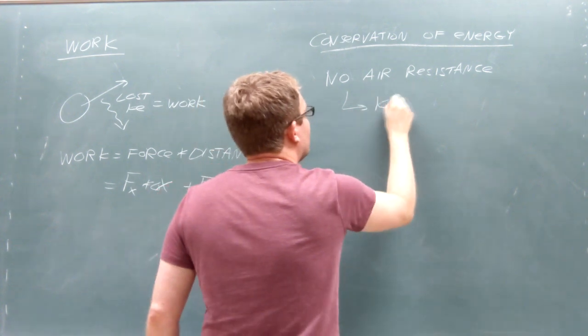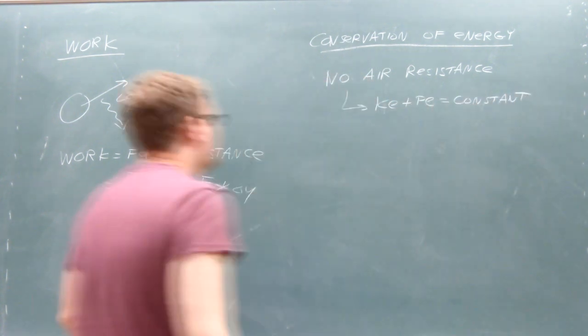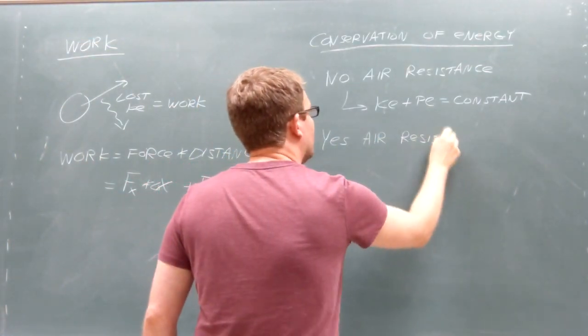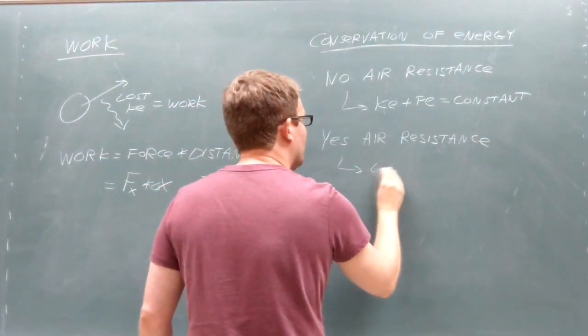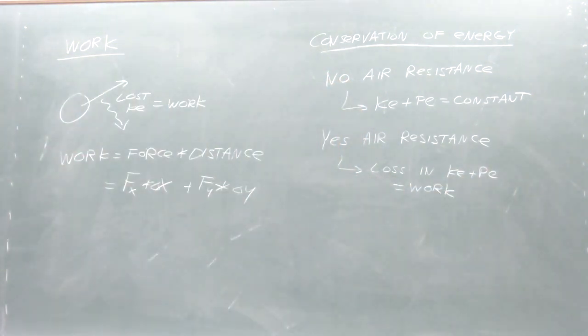First, if we have no air resistance, then the total of the kinetic energy plus the potential energy must remain constant. Second, if we include air resistance, then the total of the kinetic energy plus the potential energy will decrease by the same amount as the work done by the force of air resistance.